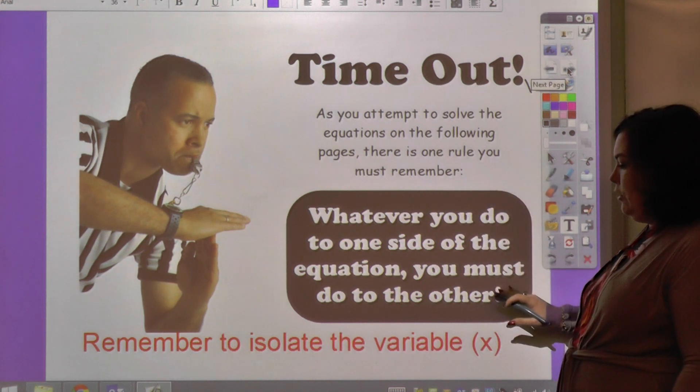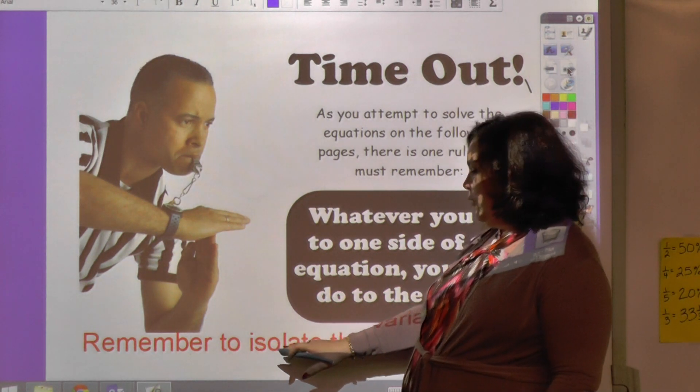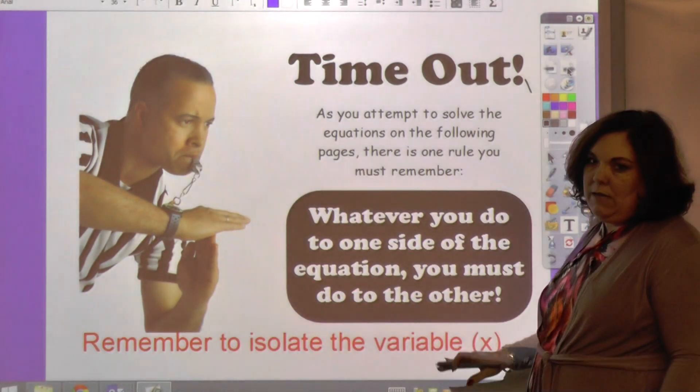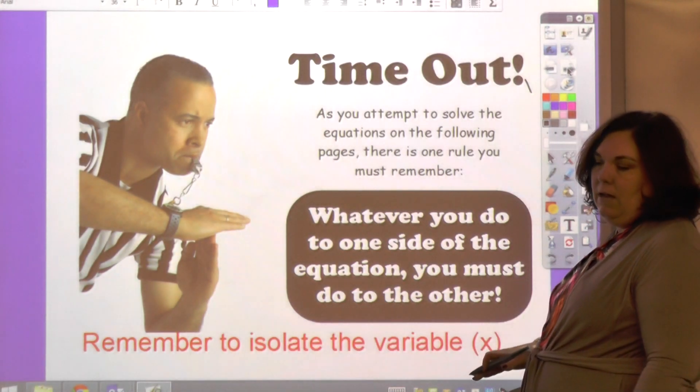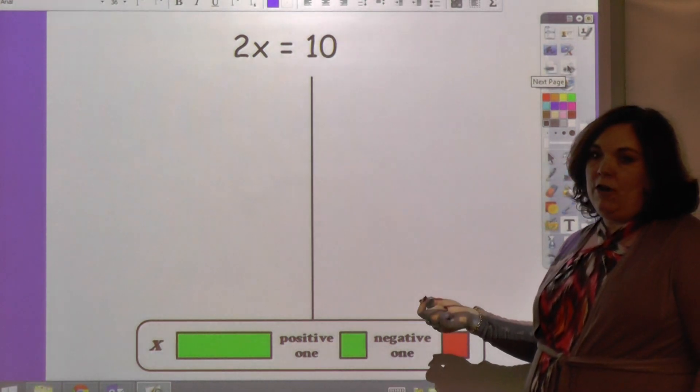Whatever you do to one side of the equation you must do to the other, and you always must remember to isolate the variable, get that x by itself.